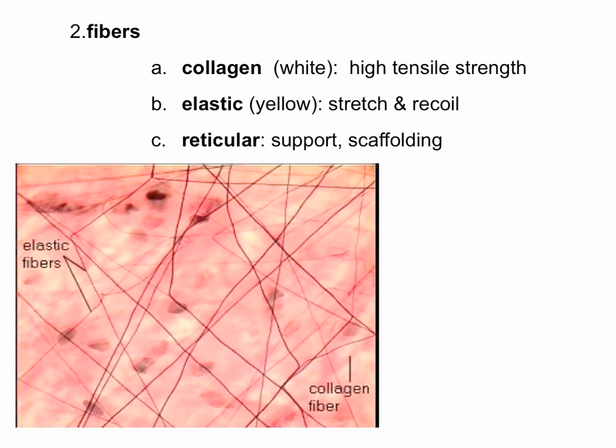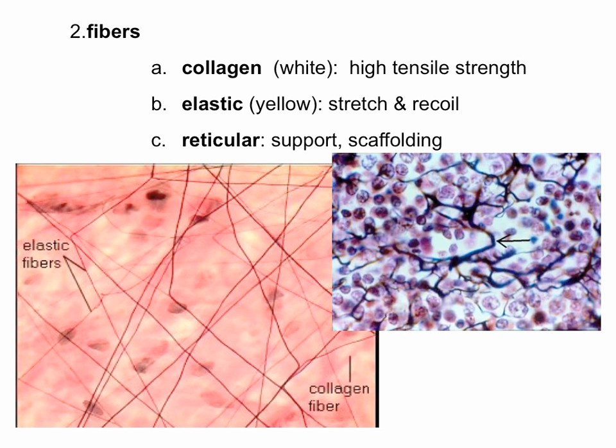In the second micrograph showing reticular fibers, you can see dark, almost black, squiggly lines that look almost like tree branches — those are the reticular fibers. They give the cells, shown as purple shapes, a place to reside, and give the whole organ some shape.